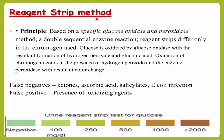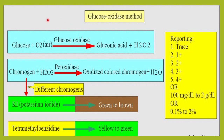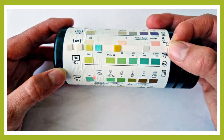The reagent strip method is based on a specific glucose oxidase and peroxidase method — a double sequential enzyme reaction. Glucose is oxidized in the presence of glucose oxidase to form gluconic acid, releasing hydrogen peroxide. The chromogen present — which can be potassium iodide or trimethylbenzidine — then reacts with the hydrogen peroxide in the presence of peroxidase to form an oxidized colored chromogen, which is the color we identify on the reagent strip.